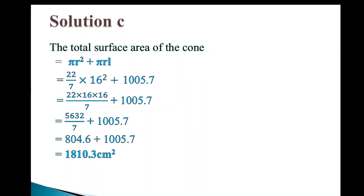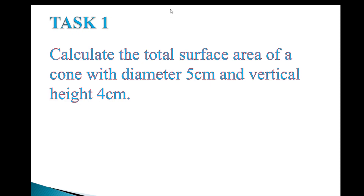Now, solve this question yourself: calculate the total surface area of a cone with a diameter of 5 centimeters and a vertical height of 4 centimeters. Note that this is the vertical height, not the slant height, so you must calculate the slant height first before you can find the total surface area. You cannot use 4 centimeters directly as your L.